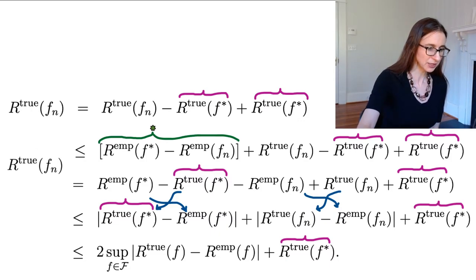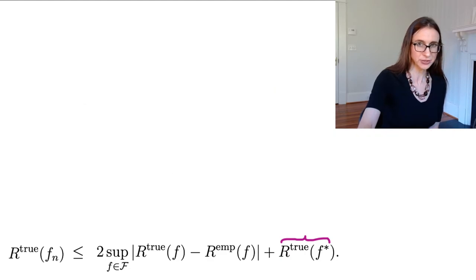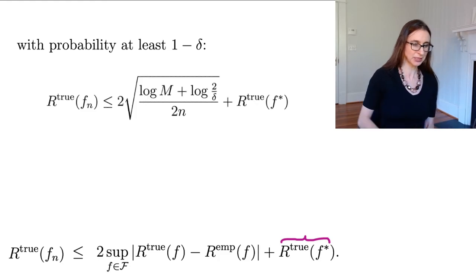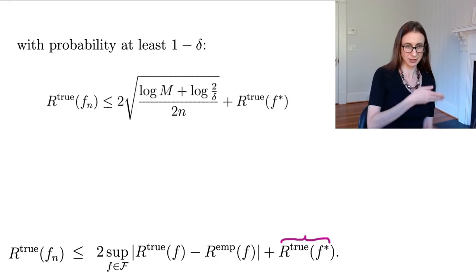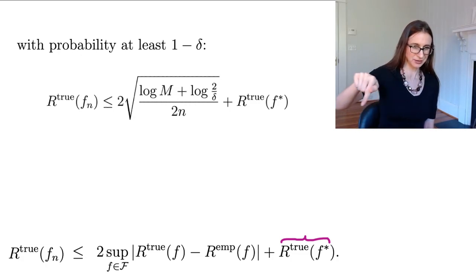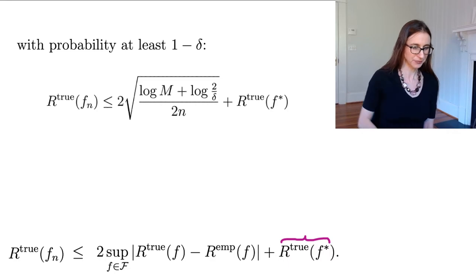Okay, so I'm just going to bring this down here and then I'll put my Occam's razor stuff in right there. So it says with probability one minus delta, the true risk, the thing on the left, is less than or equal to two times the stuff plus R true of f star, which is right there and right there.